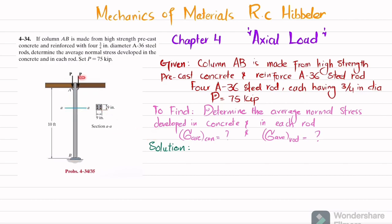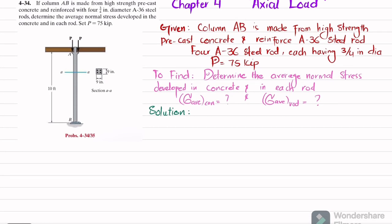The load P is given as 75 kips. Let's start with the solution. If I cut this column over any length and draw the free body diagram, it will look like this.